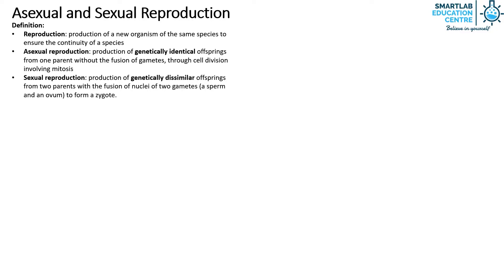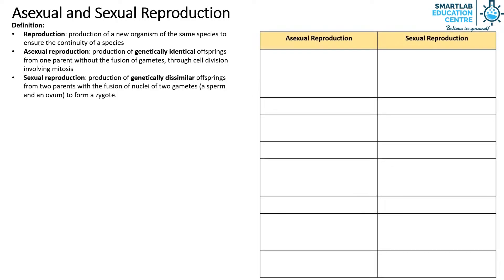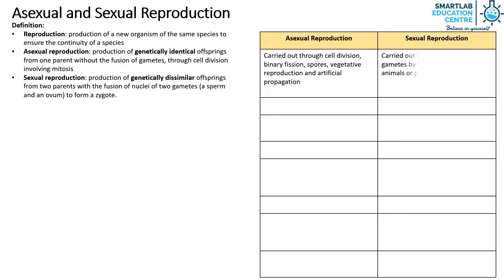Let's compare the difference between asexual reproduction and sexual reproduction. Asexual reproduction is carried out through cell division, binary fission, spores, vegetative reproduction, and artificial propagation. Whereas sexual reproduction is carried out through production of gametes by reproductive organs in animals or plants.